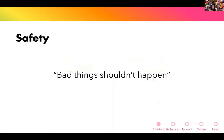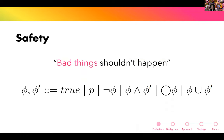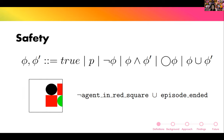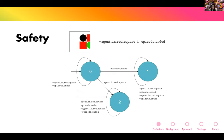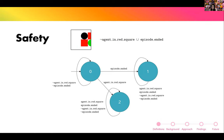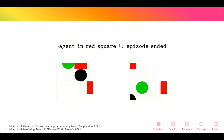Before going further, we need to define what 'safe' means. Generally, by safe we mean that agents satisfy the property that bad things shouldn't happen — specifically, a set of states the agent should not enter. We can specify this with linear temporal logic (LTL), the standard in verification. An example specification for this setting: 'not agent in red square until episode ended' — just don't go in the red square. We can build an automaton to monitor this, from the runtime verification literature.